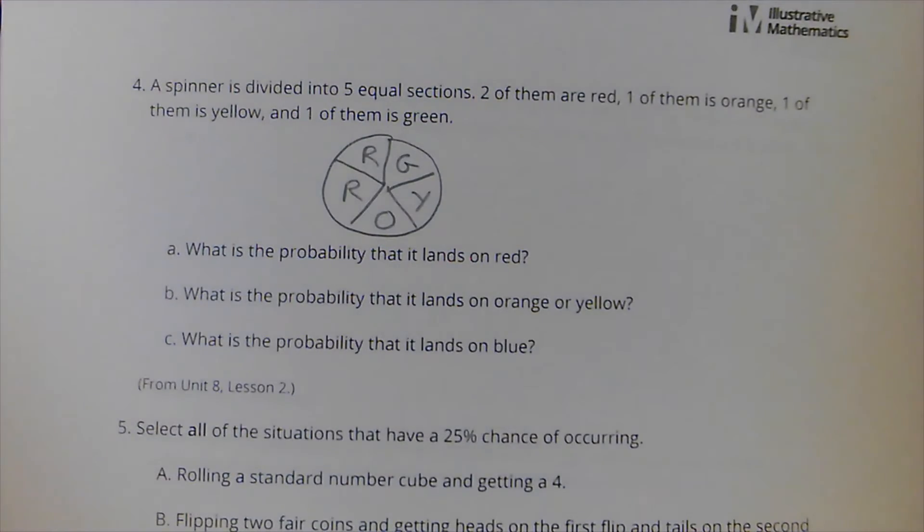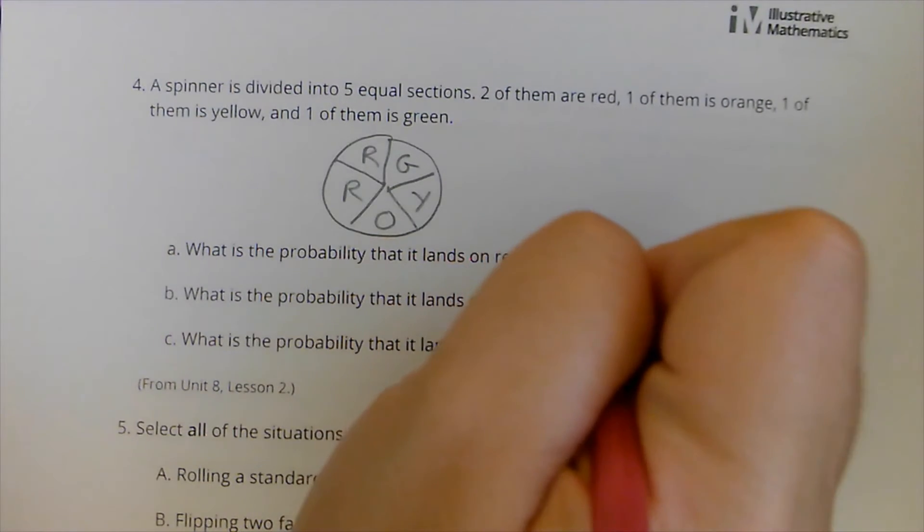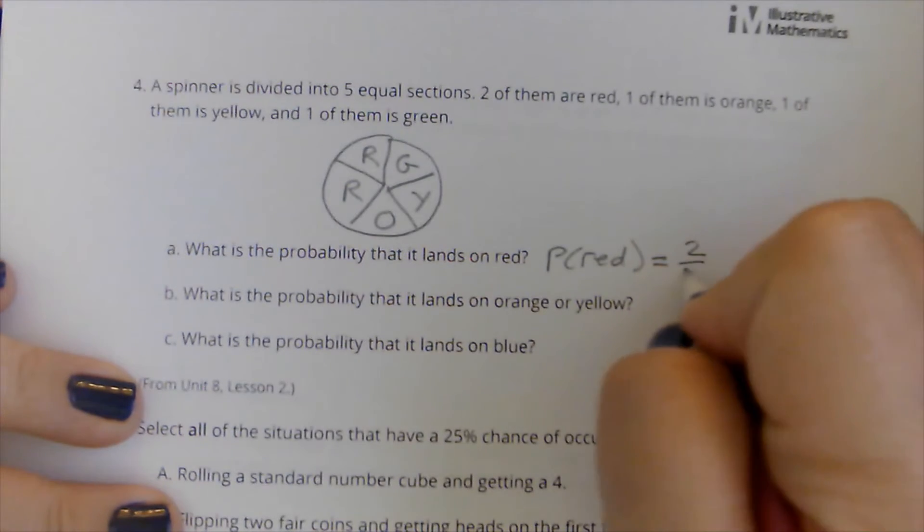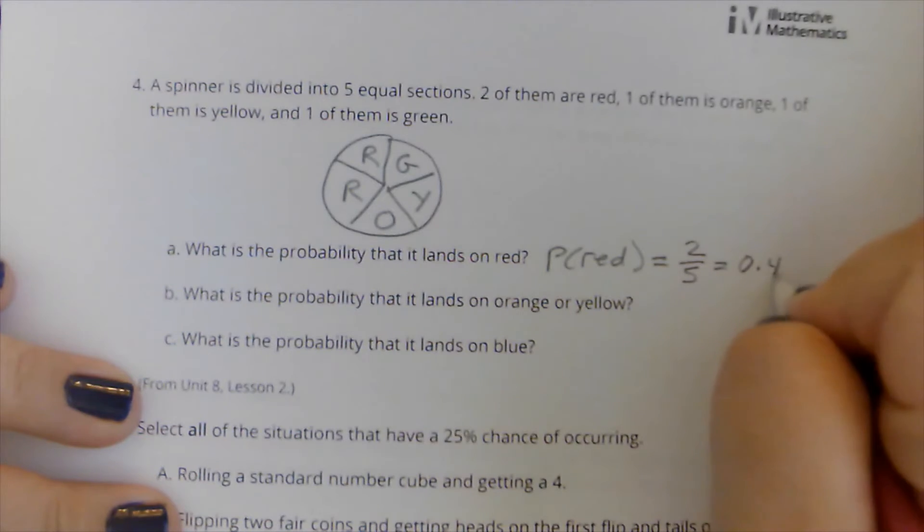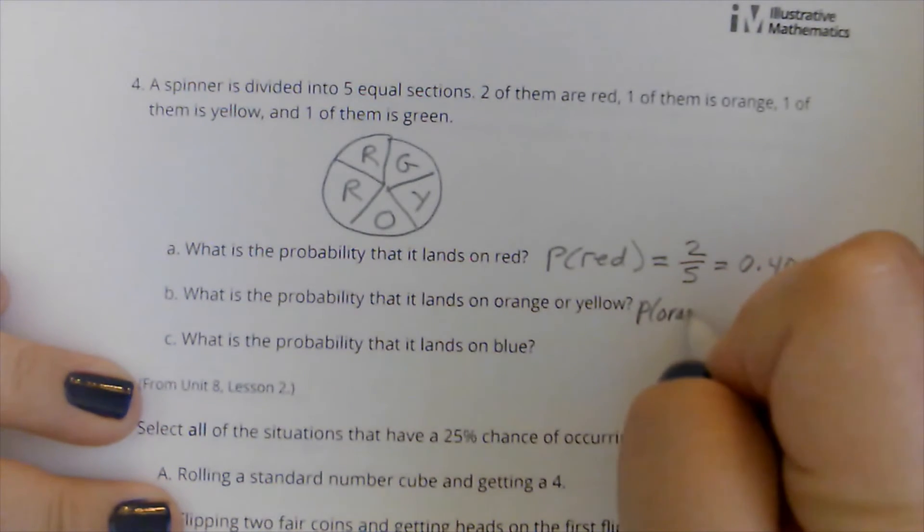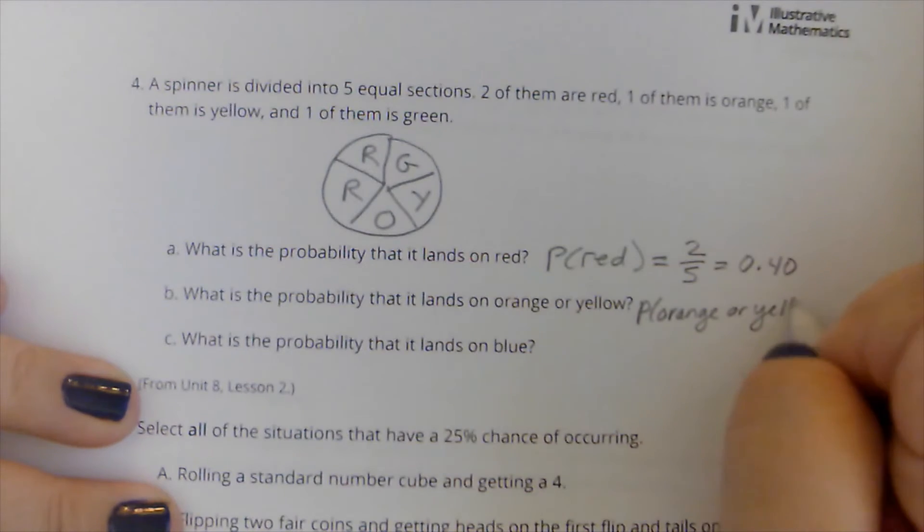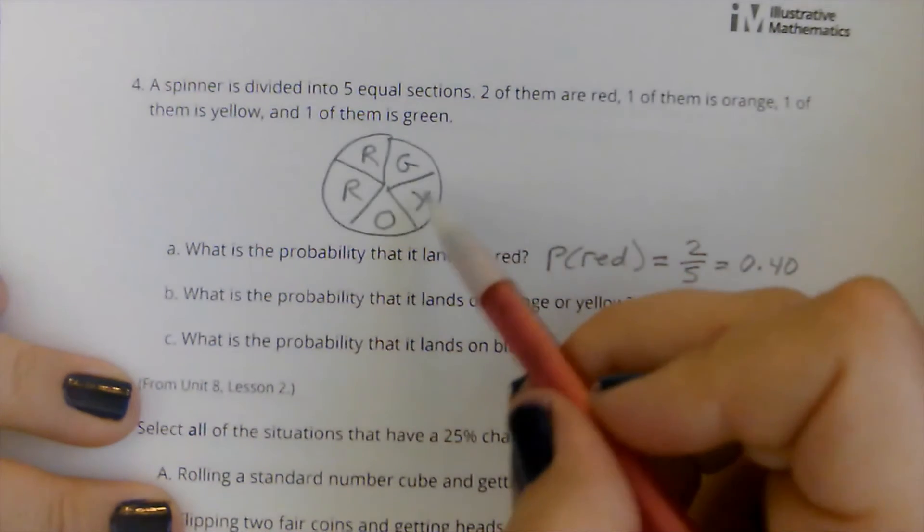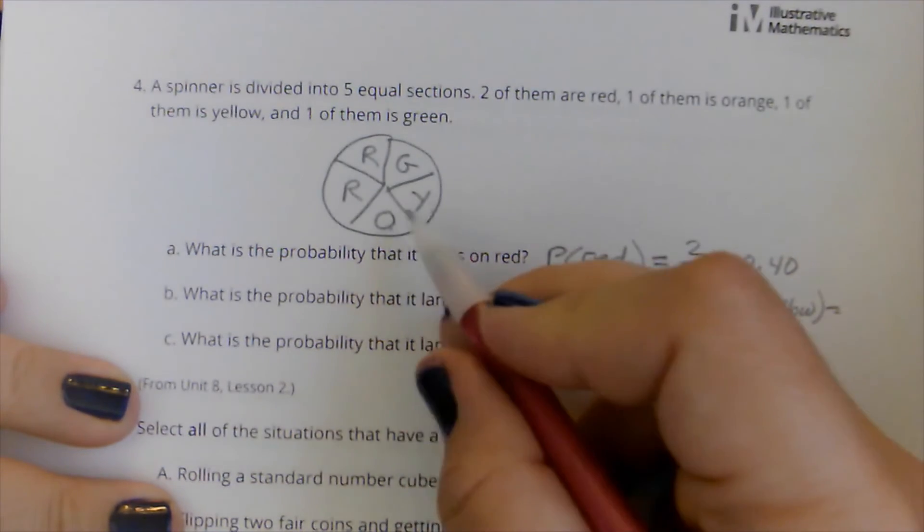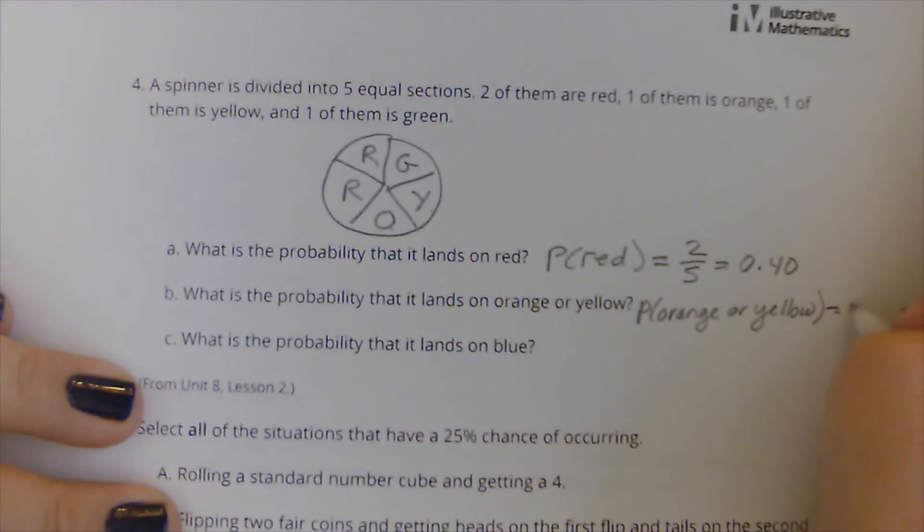So what's the probability that it lands on red? So probability of getting a red, since they're all equal, is two out of the five. So two fifths, which is 0.40. What's the probability that it lands on orange or yellow? The probability of orange or yellow. So I got these two sections, again, two out of the five, could land on orange and it would fulfill what I'm looking for. It could land on yellow or it would fulfill what I'm looking for. So it's two out of five, which again is 0.40.